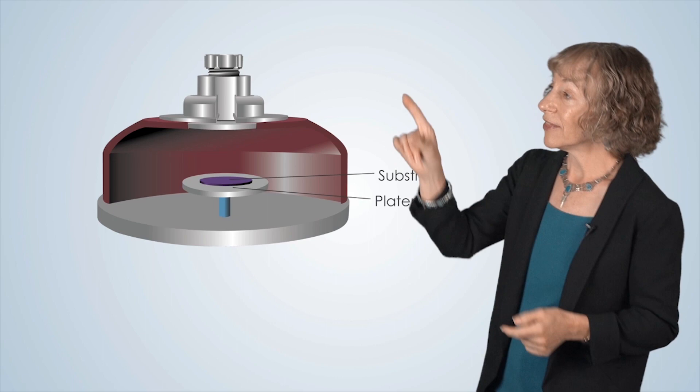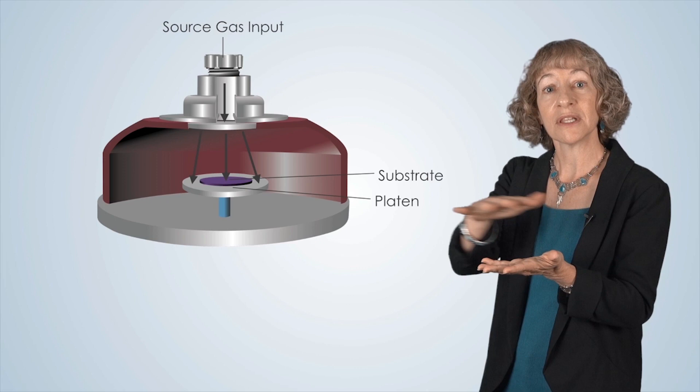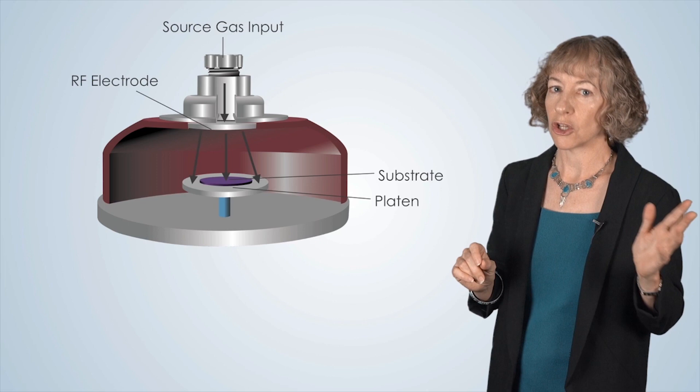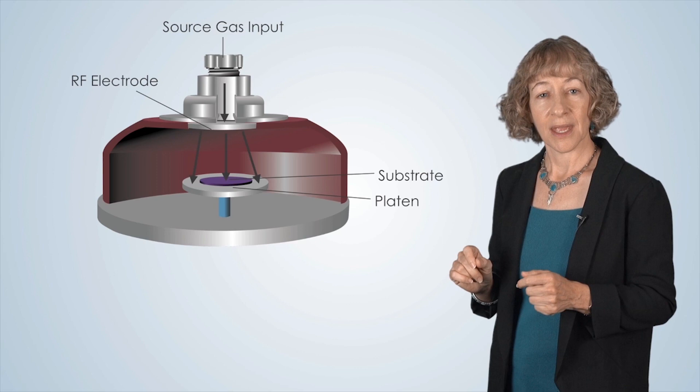At the top of the chamber, there's an input for the gas that forms the plasma that chemically reacts on the substrate's surface to deposit the thin film. In addition to the source gas, there's a high voltage radio frequency, also called RF, electrical connection to an electrode at the top of the chamber. This RF connection provides the power needed to create the plasma.